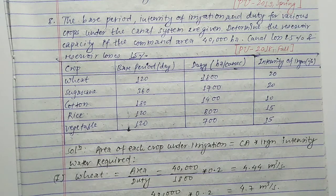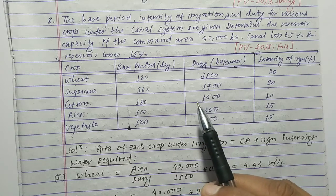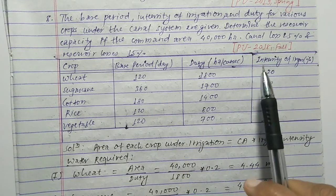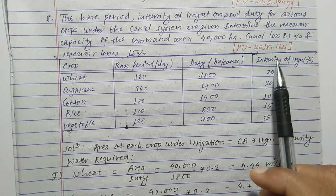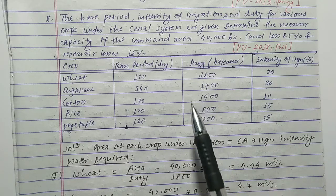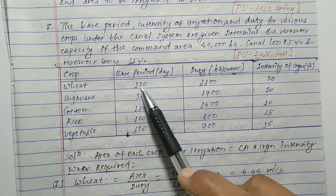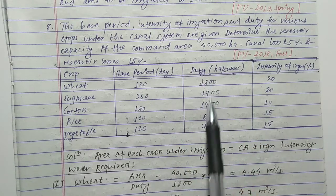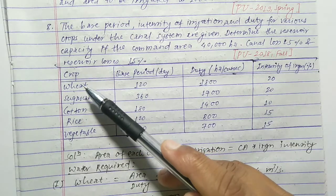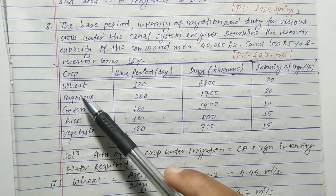Hello everyone. In this video we have a given question about the total capacity of the reservoir. This question is taken from Pokra University 2018 fall. Before this video, we have already done one numerical related to this type of problem. Let's see the question: the base period, intensity, and duty are given here. We have three columns and different crop types.